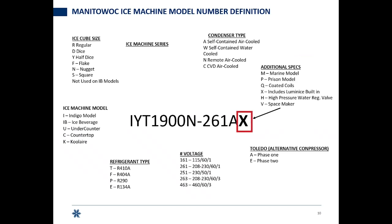After that, we're going to call out any additional specifications. Keep in mind, not every series of Manitowoc or Cool Air ice machine has additional specifications from the factory. But this machine has the letter X as in X-ray, letting you know that the Luminize sanitation system was built into this ice machine before it left the factory. You can get Luminize as an aftermarket kit, or some of our models allow it to be built into the ice machine from the factory.